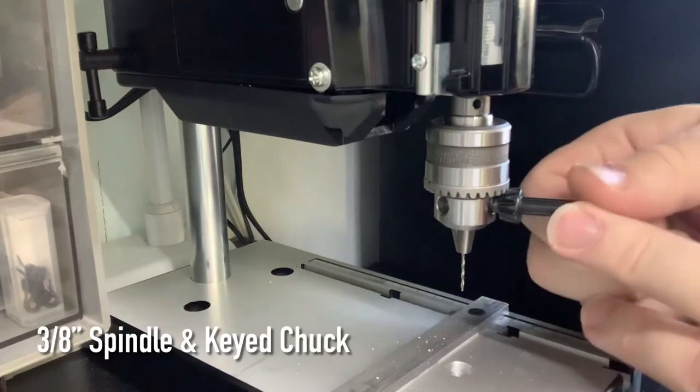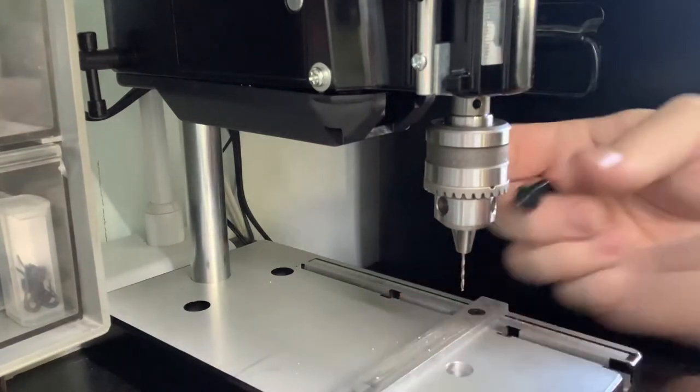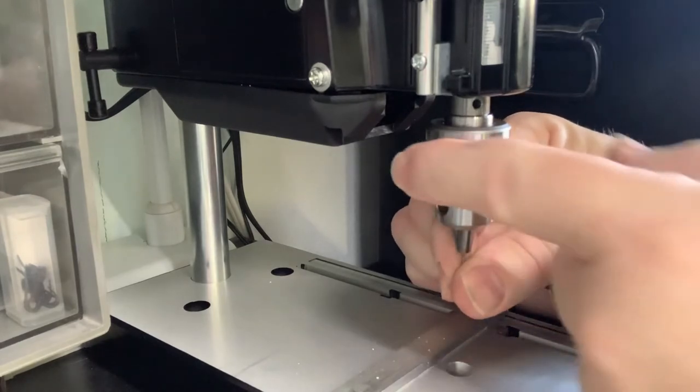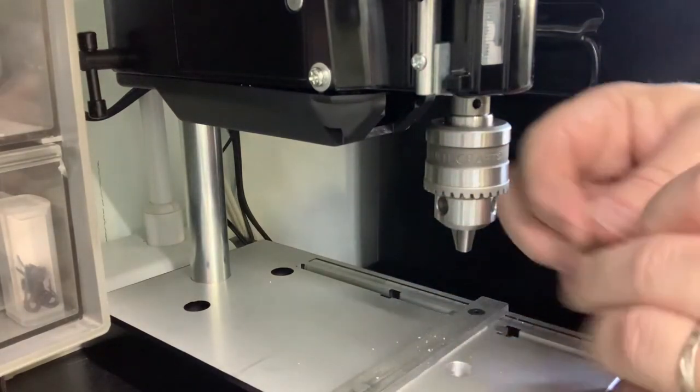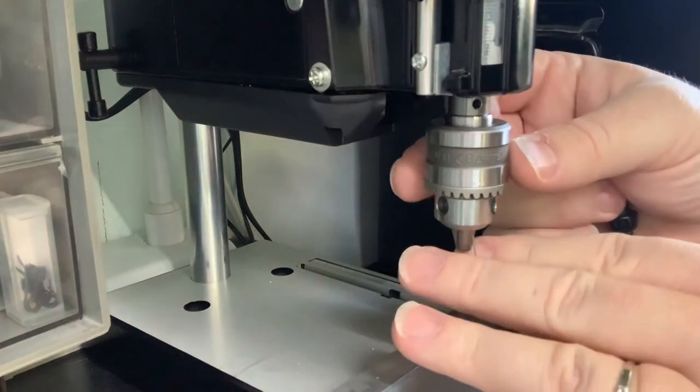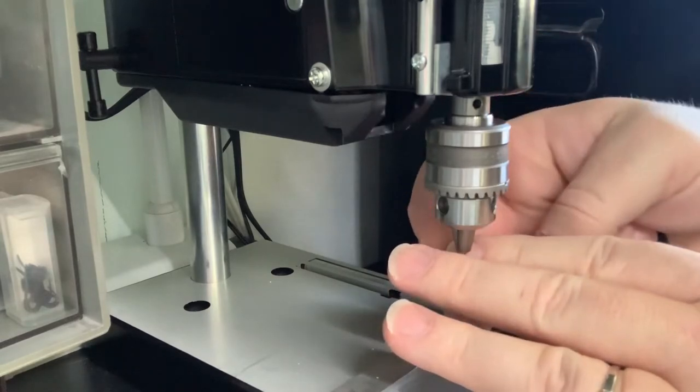The drill press comes with a key chuck that screws onto a 3 1/8 inch 24 thread spindle. It can accommodate drill bits from 1/4 inch all the way down to 0.6mm, which is about a number 73 drill bit.